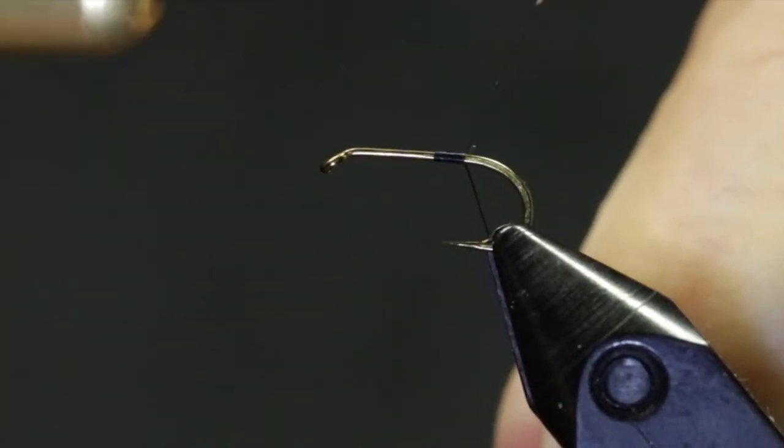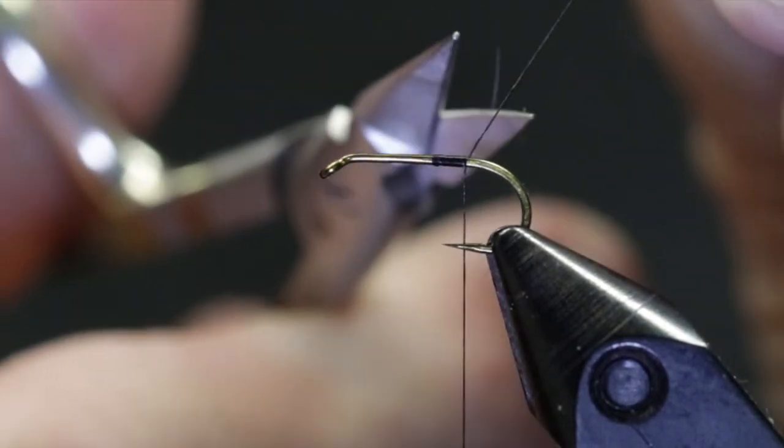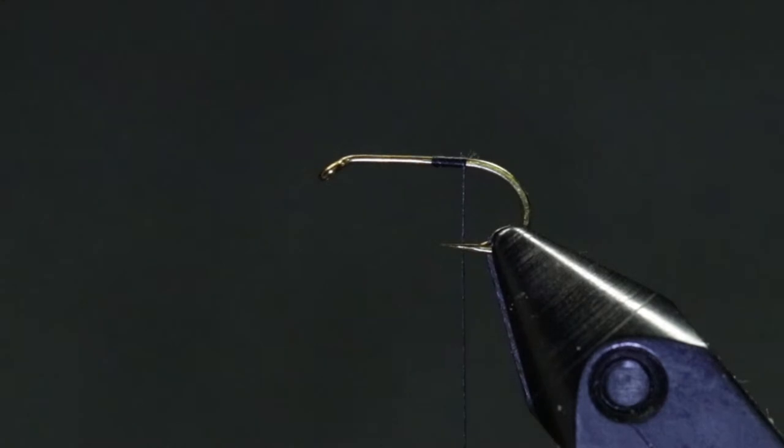We'll get the thread started at about the midpoint of the hook and take 4 or 5 turns before cutting the tag. Continue wrapping until you reach the bend of the hook.